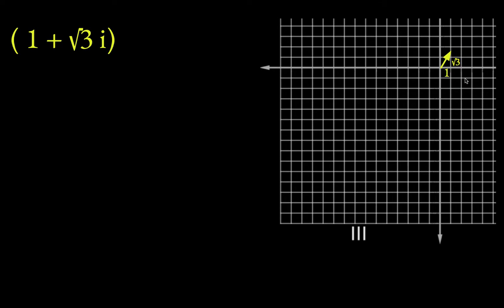If you find the length of this arrow using the Pythagorean theorem, it would be square root of 1 squared plus root 3 squared, or in other words, it would be the square root of 1 plus 3, which would be the square root of 4 or 2. So that vector is 2 units long.